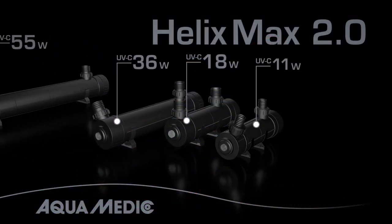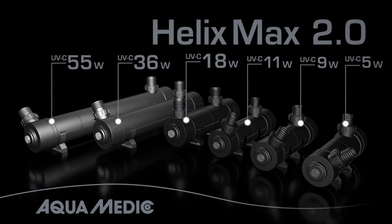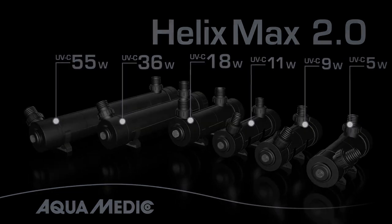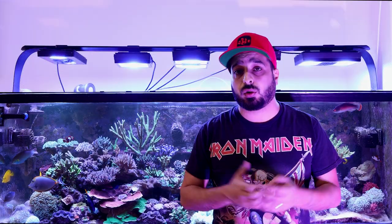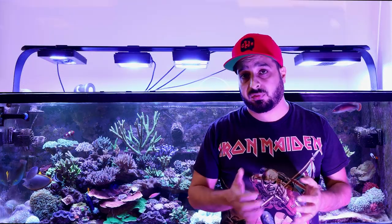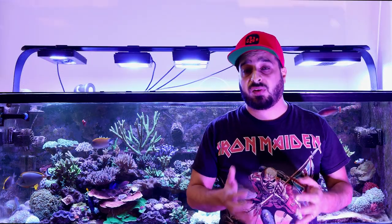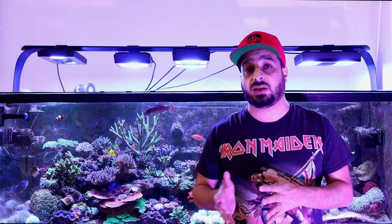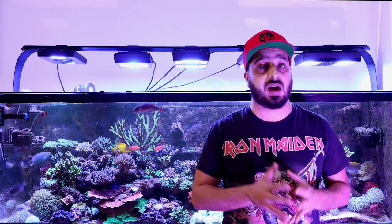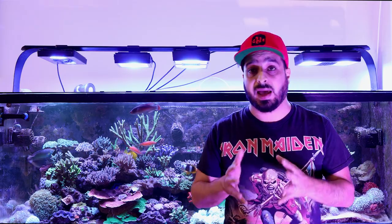Today I'm showing you the Aquamedic UV sterilizer. There are different models of Aquamedic UV sterilizers, and here are the wattage recommendations for tank size and flow. These numbers are for managing fish diseases and parasites. For clarifying the water, you will need more flow — from three to five times turnover rates, meaning for a 100-gallon tank you will need anywhere from 300 to 500 gallons per hour.